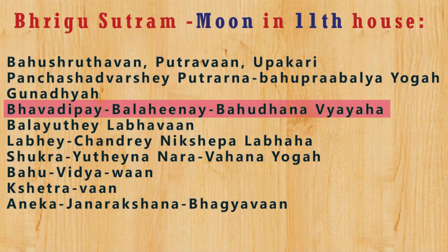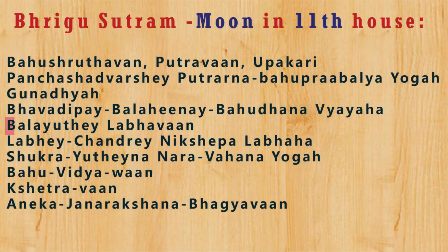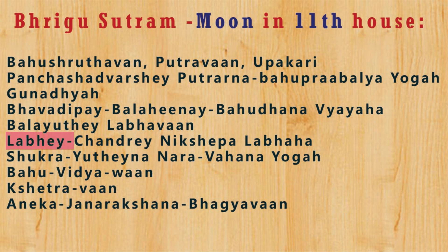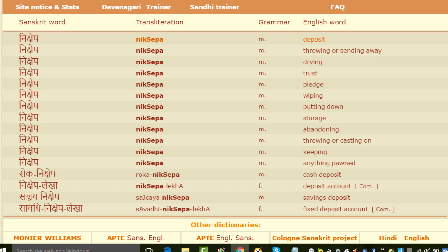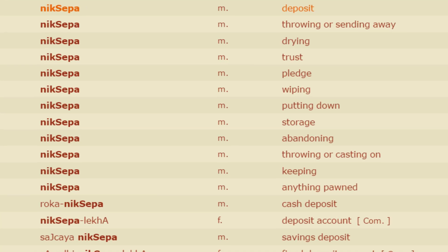'Bhavadipe Balahini, Bahu Dhanavyaya.' Now he uses the condition: 'Bhavadipe' — if the lord of the 11th house is weak, then the native will have to put up with a lot of expenditure. Throughout Bhrigu Sutram you find statements like this which advise us to look into the condition of the lord of the house concerned — in this case the 11th house. 'Balayute Labhavan' — on the other hand if the 11th lord is strong and well placed, then it gives the full effects of the moon in the 11th. 'Labhavan' — the presence of the moon in the 11th house will enable the native to acquire wealth without much effort. 'Blave Chandre Nikshepalabha' — let's look up spoken Sanskrit for the other meanings of Nikshepa.